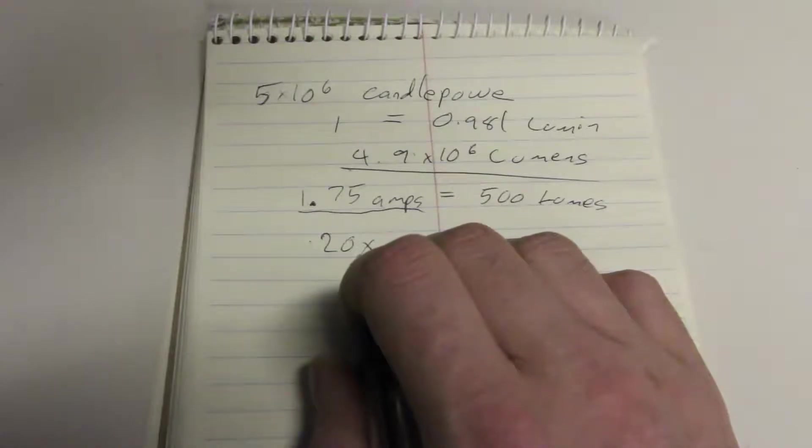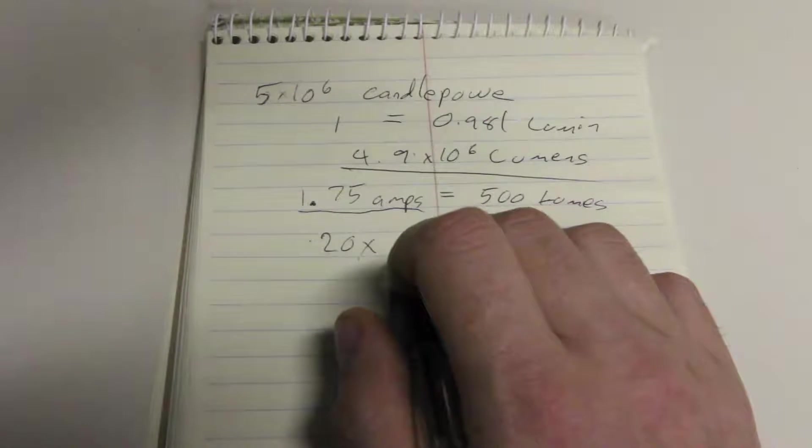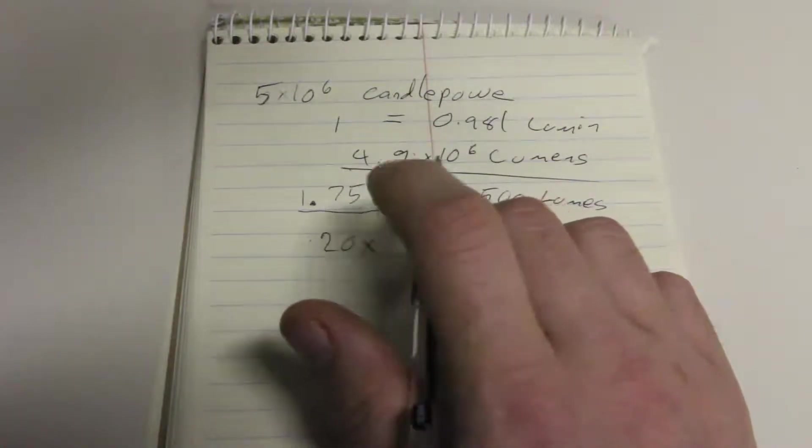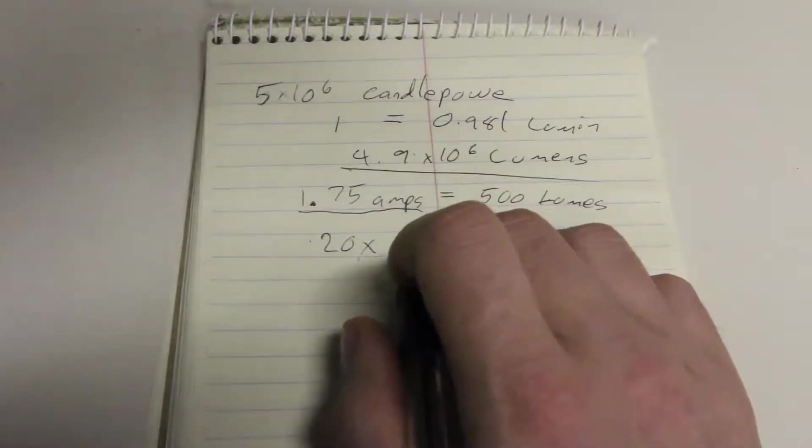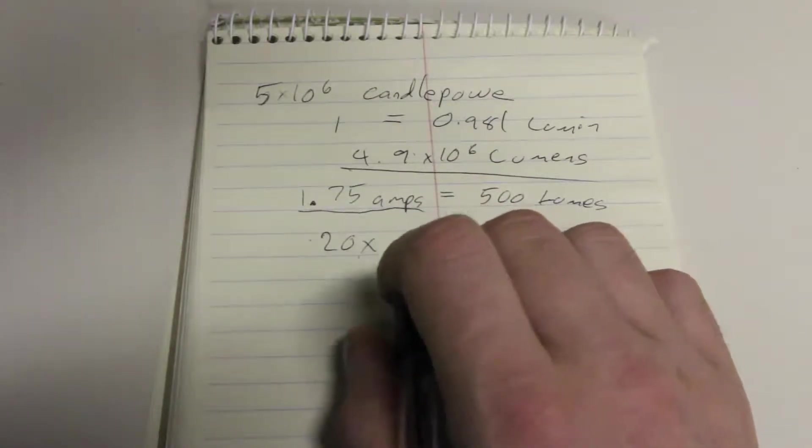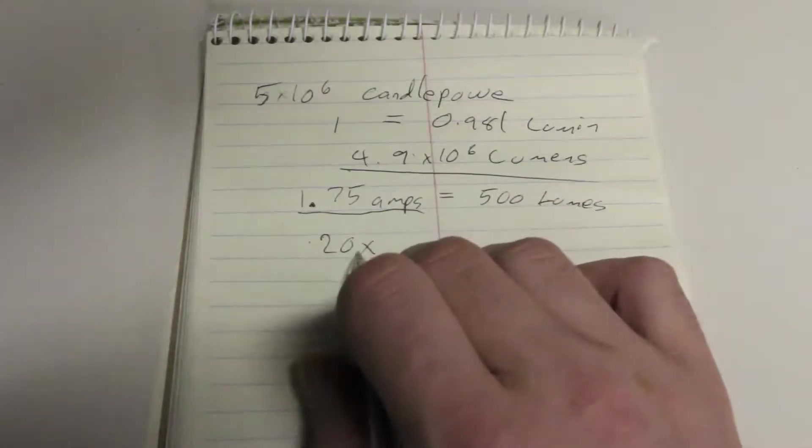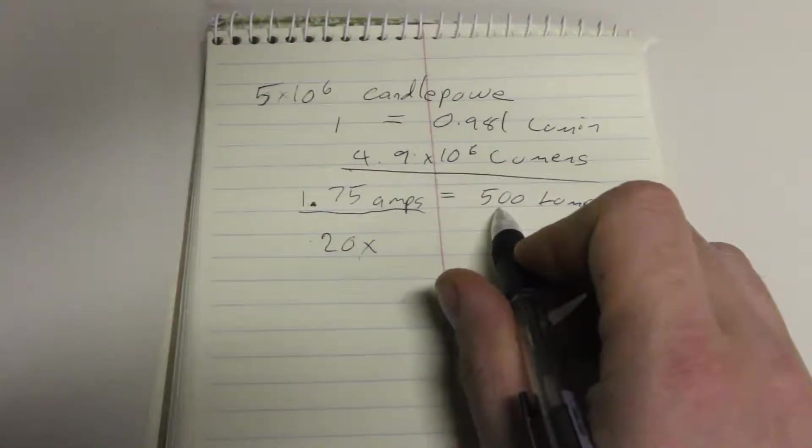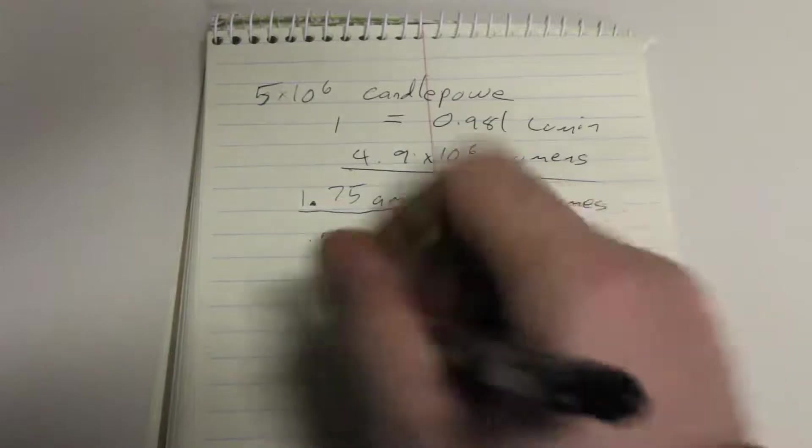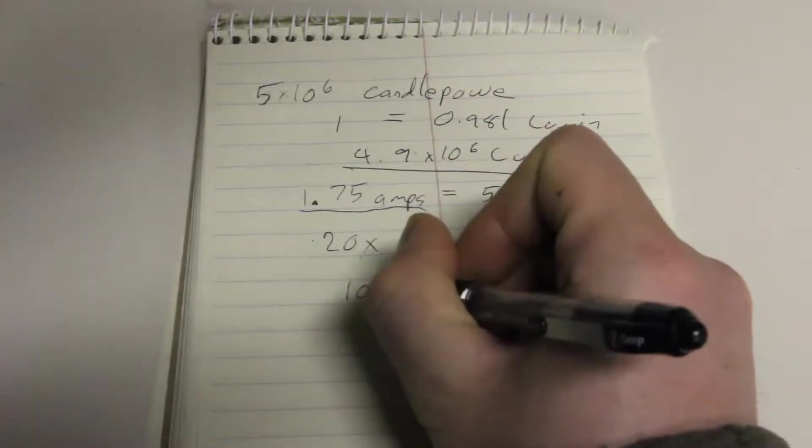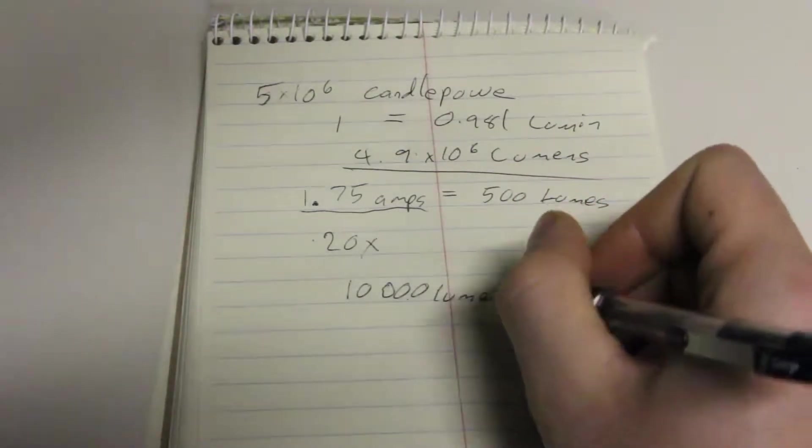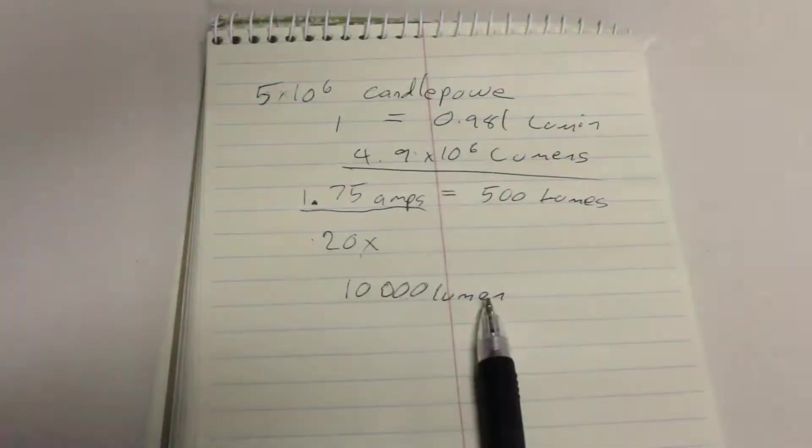There are also some other problems pointed out in this article, such as, if you try to pulse these LEDs for half a microsecond, they die instantly. I'm just going to ignore that and hope that we can find an LED that wouldn't show that problem. So, let's just say that it's running at 20x the current, and that's going to produce 20x the lumens. So, we're talking about 10,000 lumens per LED.